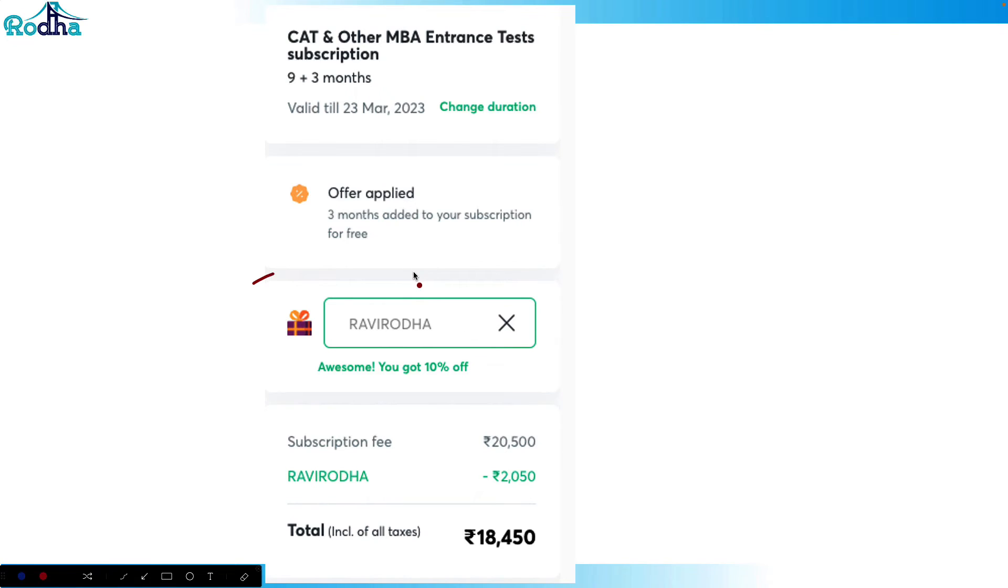And many of you were asking for some offer, so this is the offer launched just now. So from March there is a nine month subscription on which till 31st March you get this offer of three months free. So in the cost of nine months you get that 12 month subscription and you just need to apply a referral code RAVIRODA here.